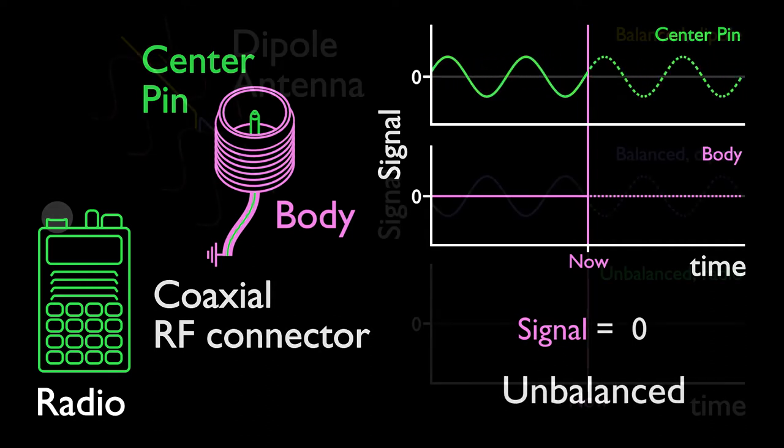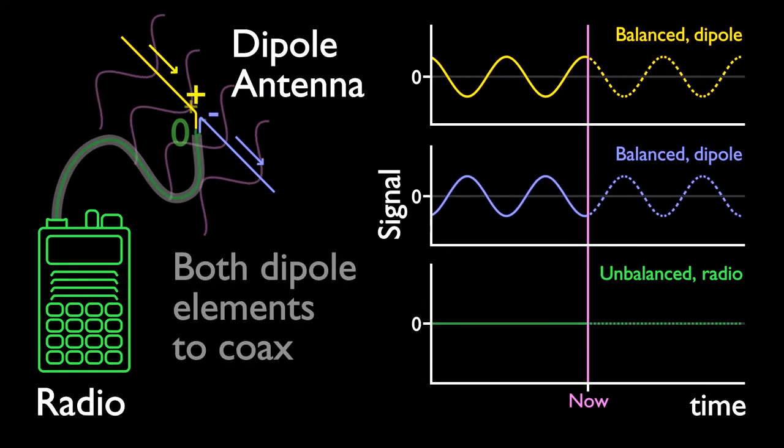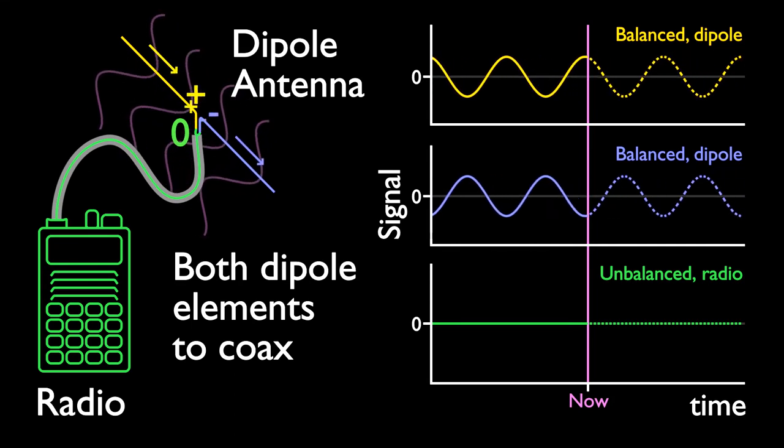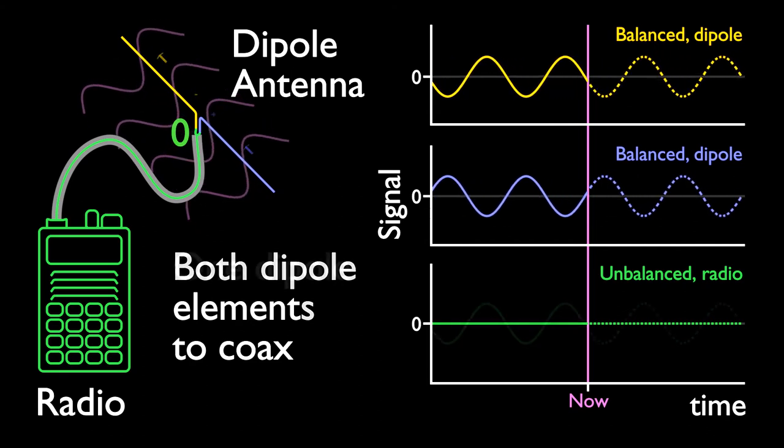So how should we connect the antenna to the radio? Starting with my unsuccessful example, if we connect both nodes to the coax center, the signals cancel each other out. So let's connect just one node.